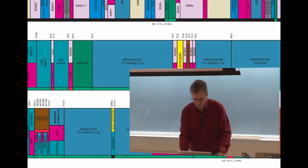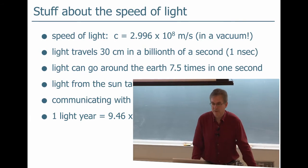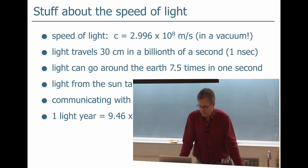Anyway, stuff about the speed of light. That's pretty cool and I'll come back to this later when we talk about light in detail. The speed of light is really really fast: 2.996 times 10 to the eighth meters per second in a vacuum.